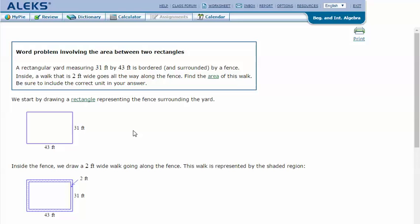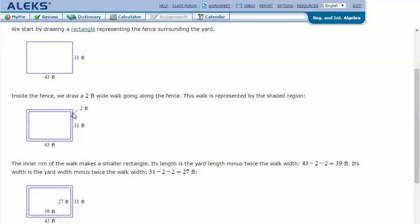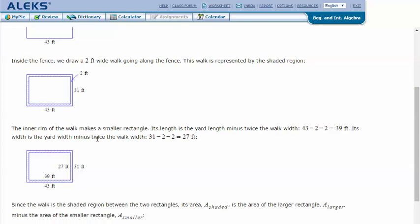We start by drawing a rectangle representing the fence surrounding the yard, which is 31 feet by 43 feet. Then we have to show the two-foot walkway that is inside the fence, between the fence and the yard, like a two-foot path which makes a smaller rectangle on the inside that represents the yard.